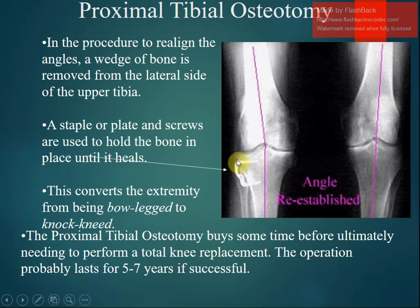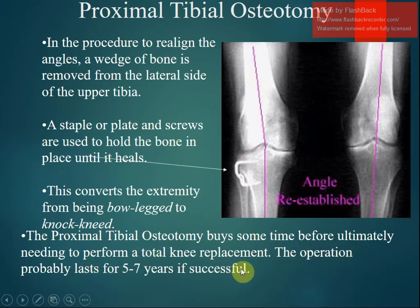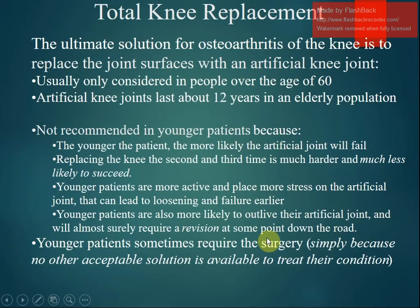A wedge-shaped part is removed from the lateral side of the upper tibia, and a plate and screws are used to hold the bone until it heals. This converts the extremity from bow-legged to knocked-knee. The proximal tibial osteotomy buys time before ultimately needing a total knee replacement; the operation probably lasts five to seven years if successful. In the most severe advanced cases a total knee replacement is required.